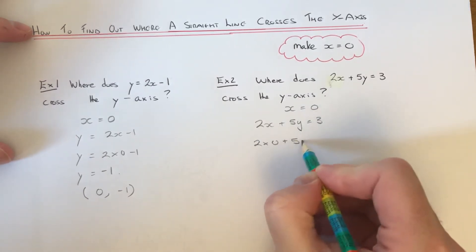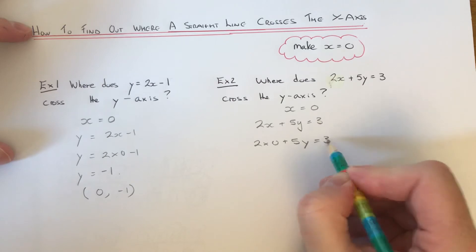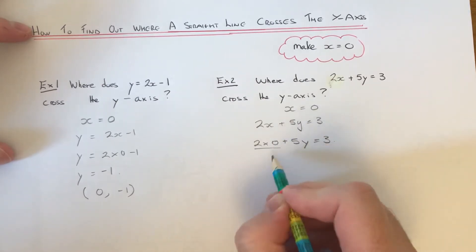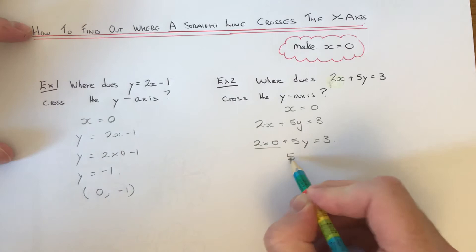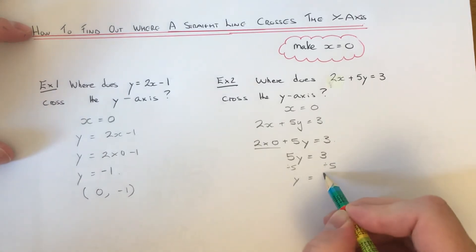Okay, so if we substitute x equals 0, we get that. So 2 times 0 is nothing, so that disappears. So we end up with 5y equals 3, and then we just got to divide 5 on both sides.